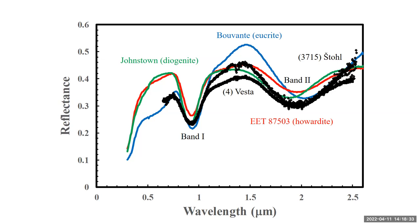This also shows IRTF spectra of 3715 Stoll and 4 Vesta. You can see they have very similar shapes — the minerals controlling the reflectance spectrum are pyroxenes. This is a very distinctive spectrum that you don't find for most asteroids. All the spectra we find like this have compositions similar to HEDs or Vesta itself. So 3715 Stoll is what's called a Vestoid. We can see from the band structure that these objects are made out of some type of pyroxene, probably with a plagioclase component — we know what they're made of because we can use HEDs as a guide.